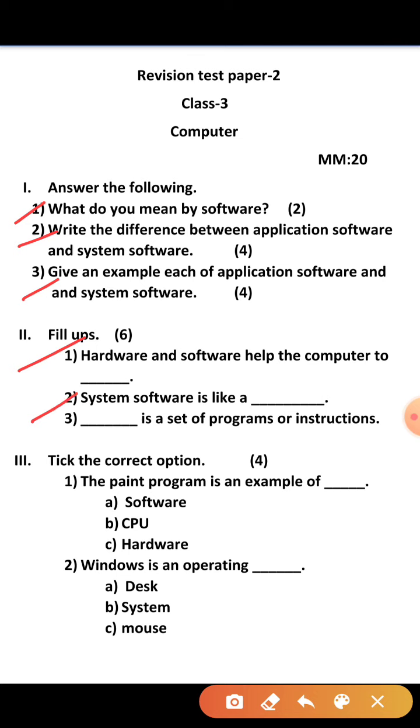Second, system software is like a dash. Third, dash is a set of programs or instructions. Come to third, tick the correct options, that is of four marks. First, the paint program is an example of dash. Three options are here.